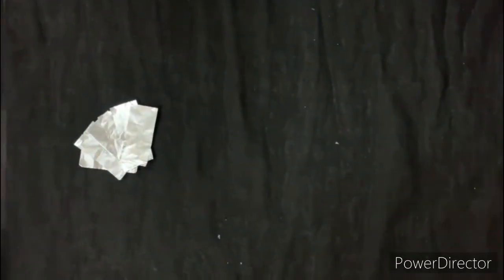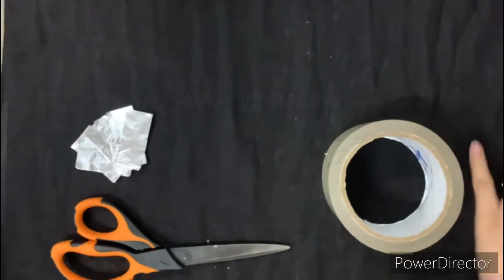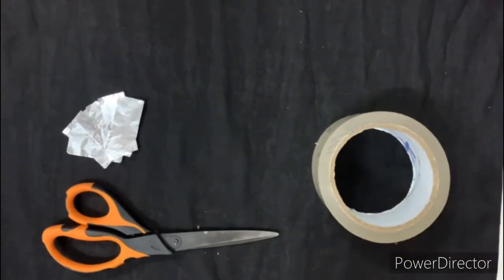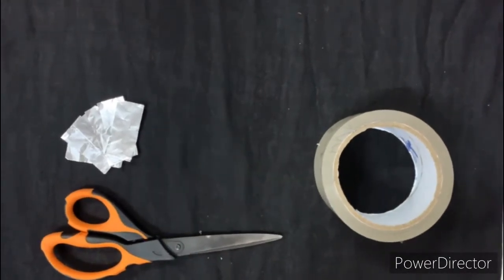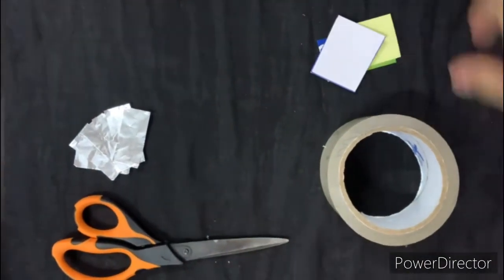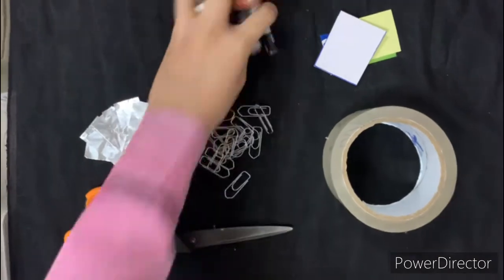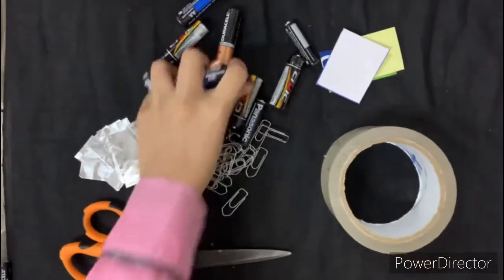For this DIY capacitor, you will need six pieces of foil, scissors, clear tape, different textures, different cuts, different thickness of paper, paper clips, and batteries.